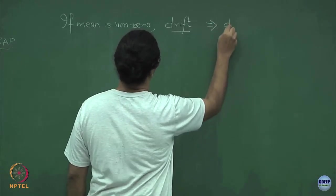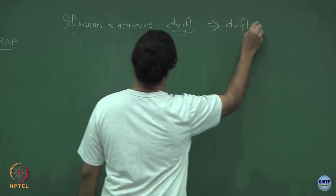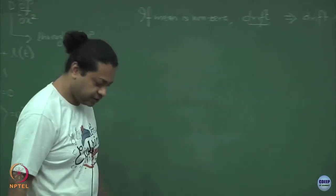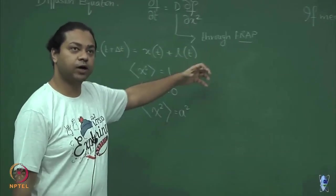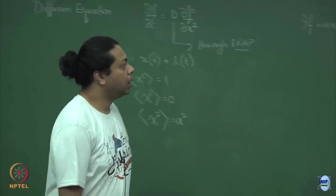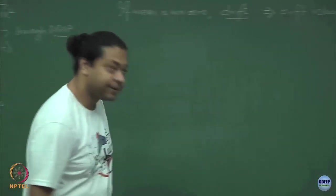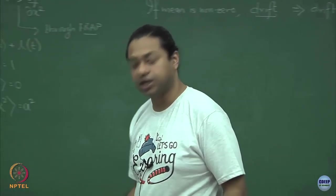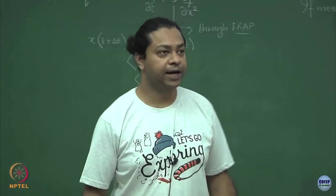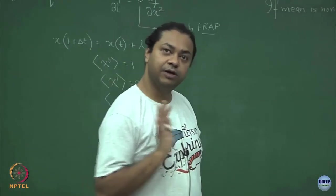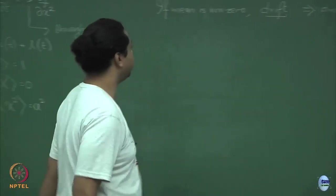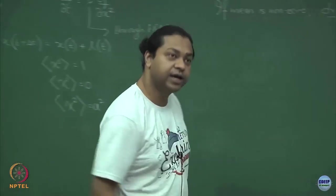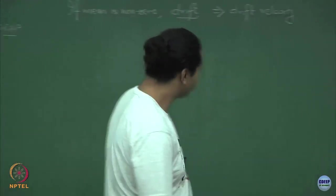So it has some drift velocity. It could happen if these individual steps of the random walk have a nonzero mean, or for example, if you apply some sort of an external force. If you have charged ions or charged proteins and you apply an electric field, then that electric field will tend to push the ion in a certain direction depending on how you apply the electric field. So if you have a net force, you will have some sort of a net drift.